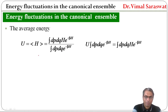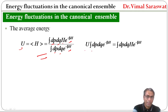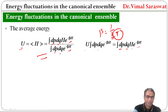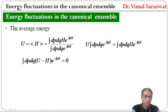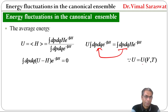If we cross-multiply this equation, then U into integration dp dq e raised to minus beta H is equal to integration dp dq H e raised to minus beta H. So, U integration dp dq exponential minus beta H equals integration dp dq H exponential minus beta H. Here beta is equal to 1 upon kT, where k is Boltzmann's constant and T is absolute temperature. Now, U is a function of V and T.